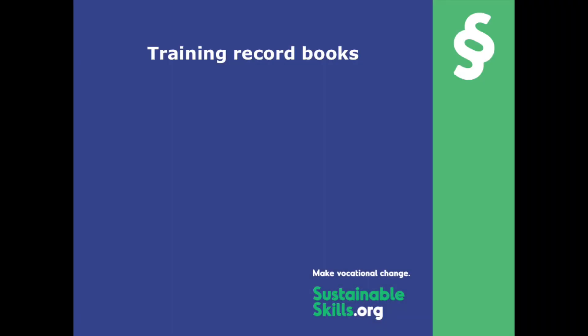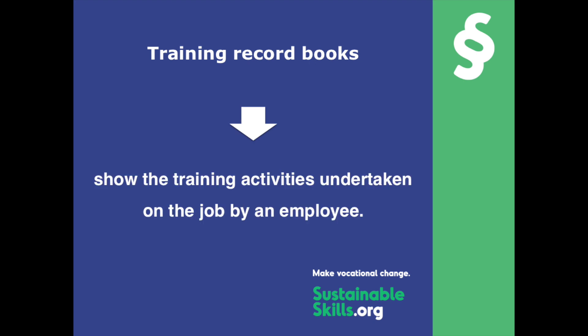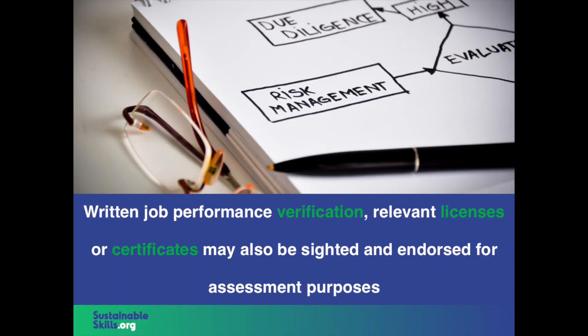Training record books are often used to show the training activities undertaken on the job by an employee. Where the employee's job performance has been observed by a supervisor or other suitable third party, written verification of this can also be used as supporting evidence for assessment purposes.